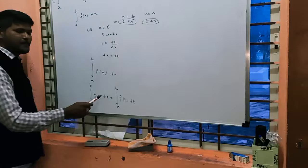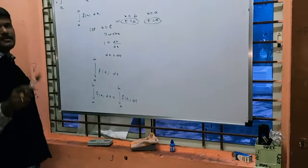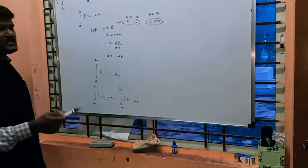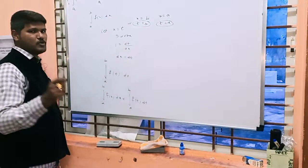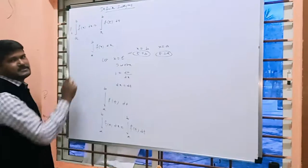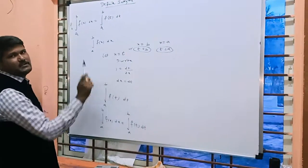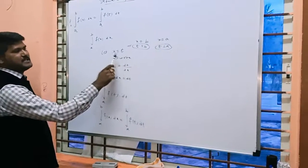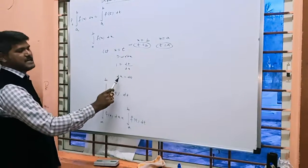We are using this particular property in the next property, property 3. In different properties we are using the same property. See one more explanation. I consider LHS: a to b f(x)dx. I consider x equals t. After differentiating with respect to x, 1 equals dt/dx, dx is dt.